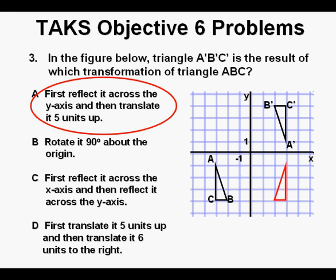Here is the first step from answer A, triangle A, B, C reflected across the Y axis. It's in red here to help us see it. And here it is, translated 5 units up. It is in the same location as triangle A prime, B prime, C prime, but is in the wrong orientation. So it's wrong, and we cross it off.